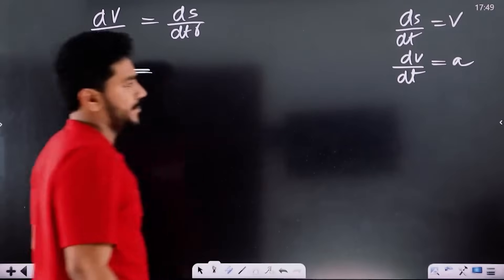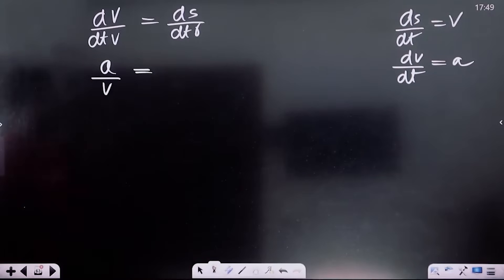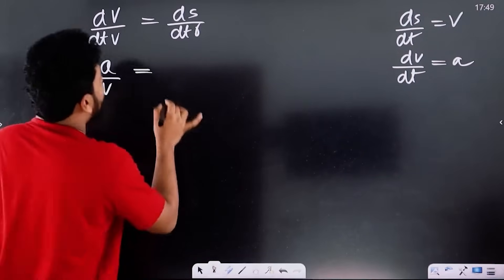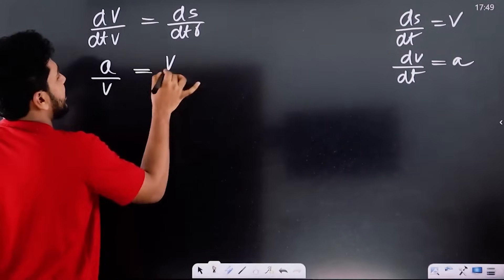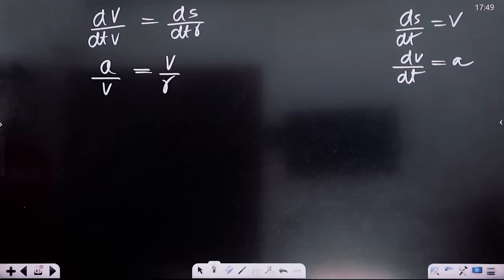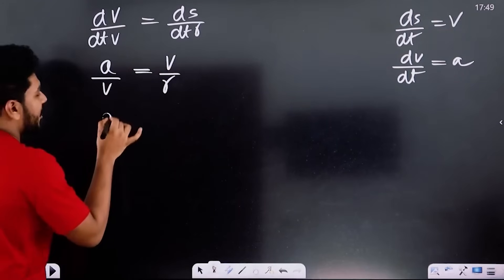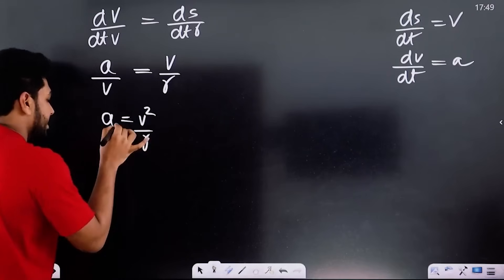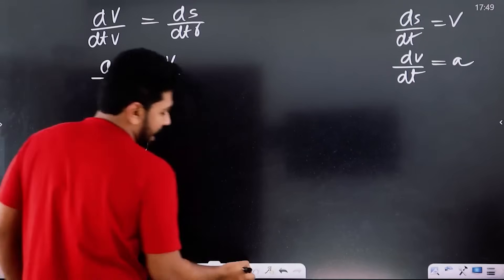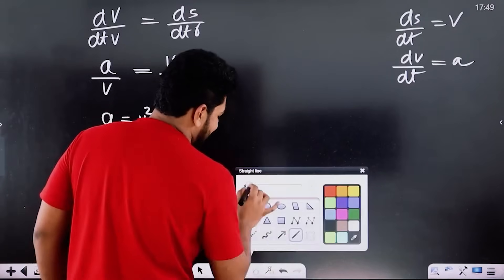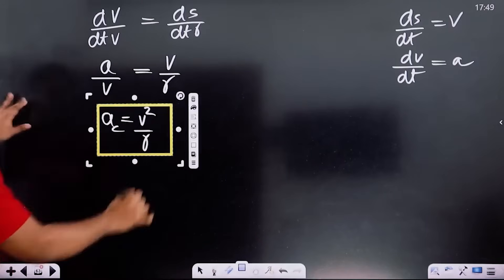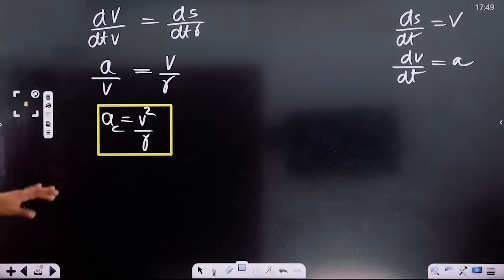Linear velocity: dv by dt is acceleration. So acceleration equals velocity times velocity divided by radius — that is, v² by r. This is the formula for centripetal acceleration: AC equals v² by r.